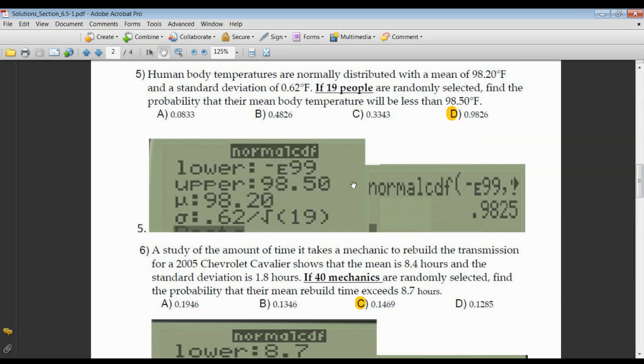Number five, human body temperatures. We're interested in the probability that the mean of these 19 peoples' body temperature is less than 98.50. You're going to your left, which means your lower limit is negative E99. Your upper limit, 98.50. There's your mean given to us as 98.2. Standard deviation is the original standard deviation, 0.62, divided by the square root of n, n meaning these 19 people, and you're off by one ten-thousandth. The calculator's off by one. No big deal.